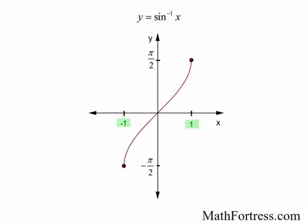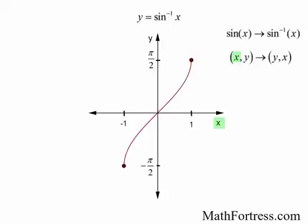Notice that we restricted the domain in order to make this relation a function — in other words, it passes the vertical line test. In addition, notice that the domain and range are switched. That is to say that the values of x, the domain, on sine of x become the values of y, the range, for arc sine. And the values of y, the range, for sine of x become the values of x, the domain, for arc sine. Looking at the graph of arc sine, we further define it to be restricted to quadrants 1 and 4 in the unit circle. In other words, the corresponding range of arc sine is between negative pi over 2 and pi over 2.